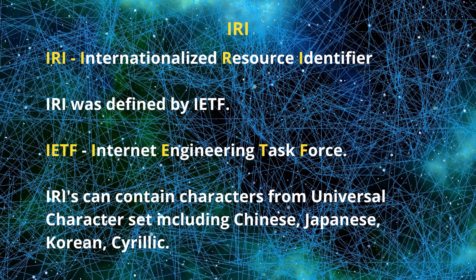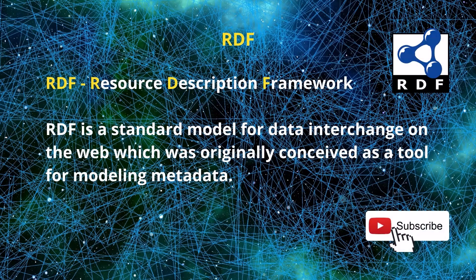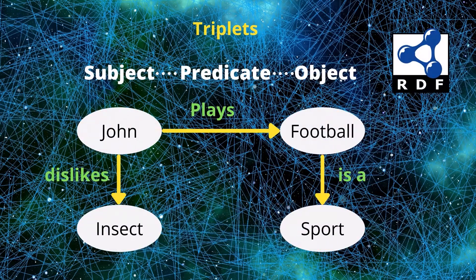RDF, or Resource Description Framework, is a standard model for data interchange on the web. Originally conceived as a tool for modeling metadata, RDF is based on making statements about a resource in the form of subject, predicate, object — also known as triplets. The subject denotes the resource, the predicate denotes an aspect of the resource and expresses a relation between the subject and the object. For example, the subject is John, the object is football, and 'plays' is the predicate that links them. RDF allows effective data integration from multiple sources. Detaching data from its schema allows multiple schemas to be applied, interlinked, queried as one, and modified without changing the data instances.